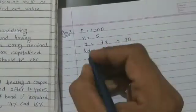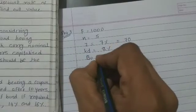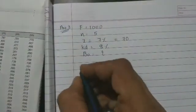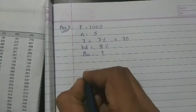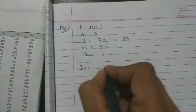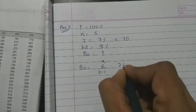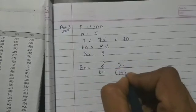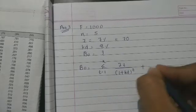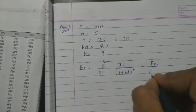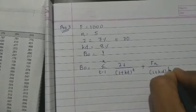What should be the value of the bond? Simple. Using the direct method, price of the bond is: summation T = 1 to N of iT / (1 + Kd)^T + FN / (1 + Kd)^N.